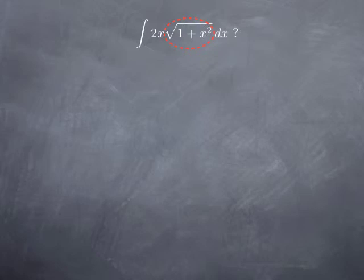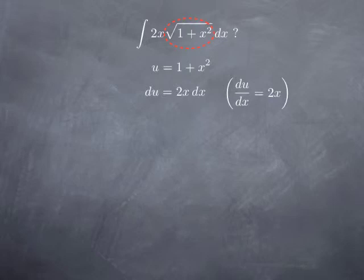In our case, the composite part is the square root of 1 plus x squared — we plug 1 plus x squared into the square root. The new variable is always going to be the function inside the composite, so we set u equal to 1 plus x squared. Then we calculate du, which is the derivative of u with respect to x multiplied by dx, giving du equals 2x dx. And now we see that the 2x dx in the integral is exactly this du.